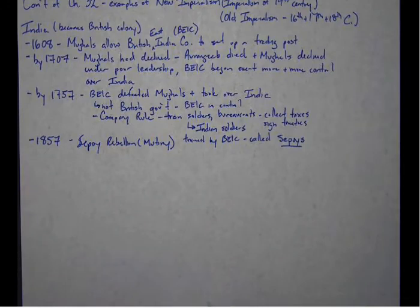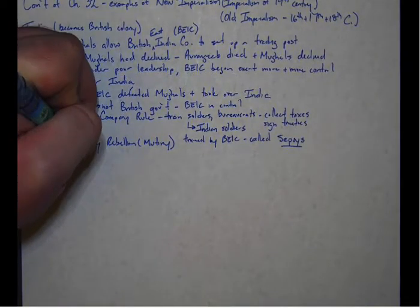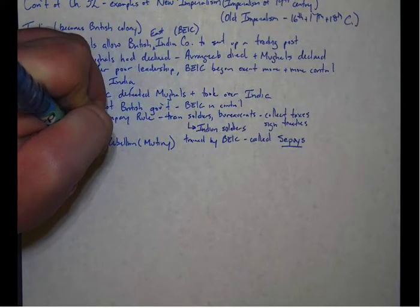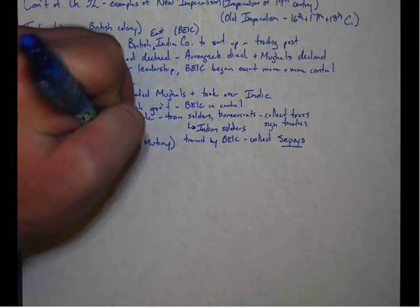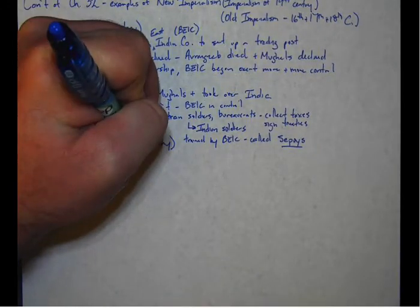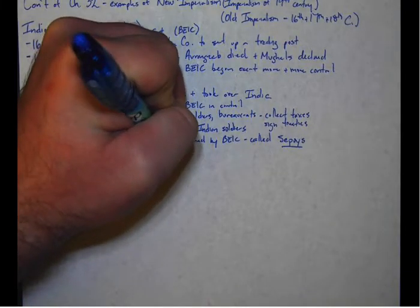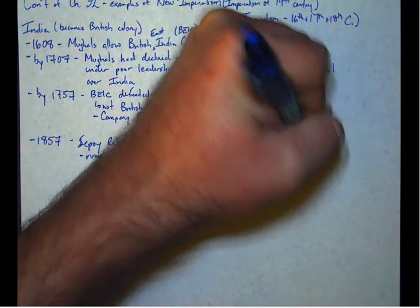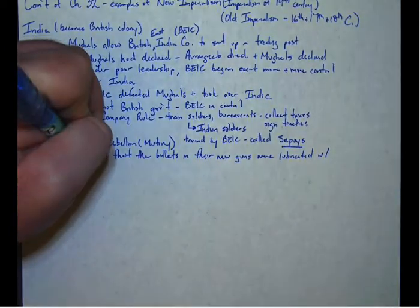And here's what happened. The sepoys heard a rumor. There was a rumor that the bullets in their fancy new guns were lubricated with animal fat.